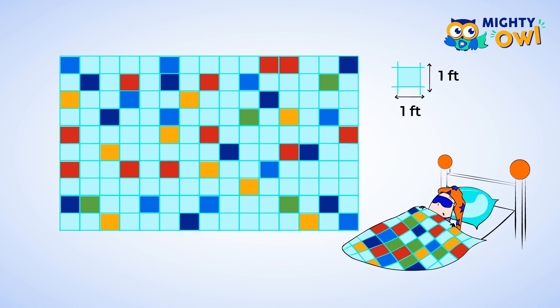These squares make the quilt look a bit like an array. And we used arrays to learn multiplication when we counted the rows and columns and multiplied them. We can use that strategy here. I can multiply to find the total number of squares.